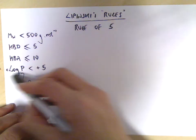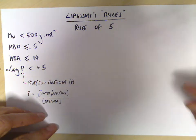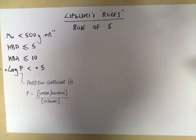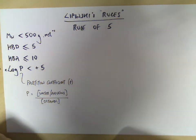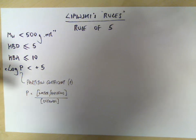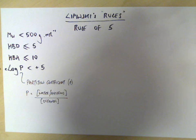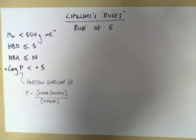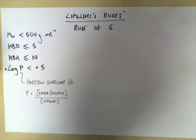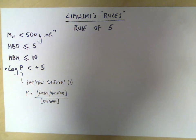If these parameters are all satisfied for a particular drug, then there's a very good chance that that drug will be orally available in the human body. You can take the drug as a tablet and it will pass through your stomach, be orally available, be aqueous soluble, and be able to get to its site of action.